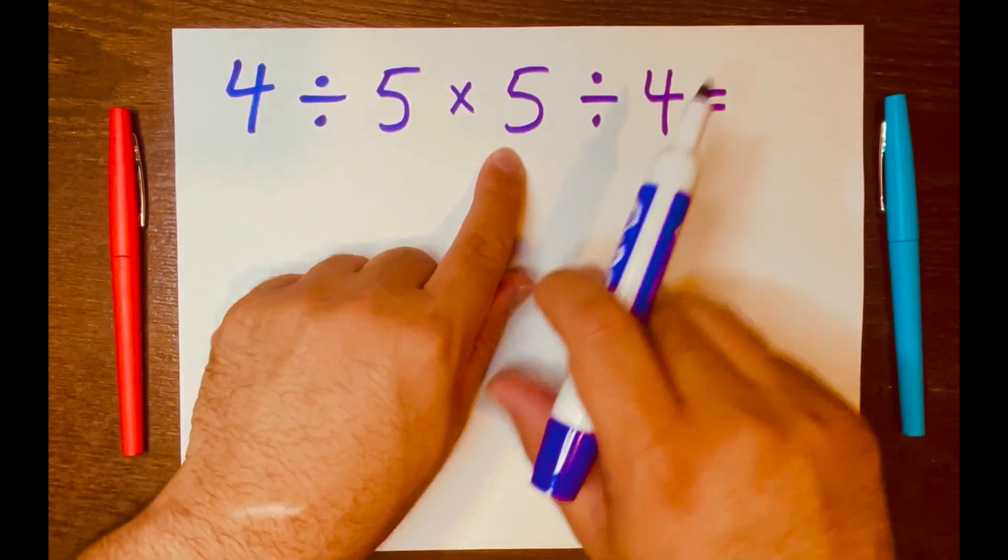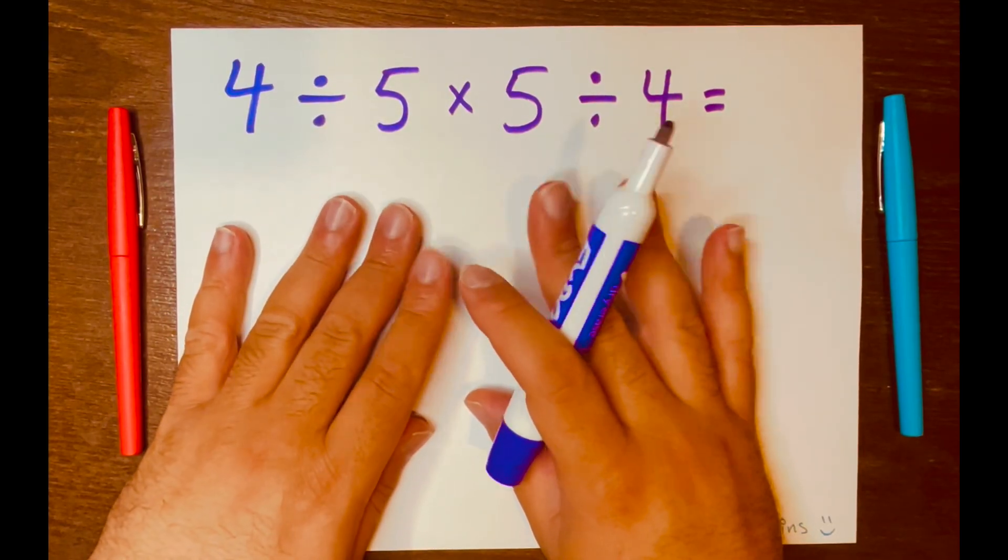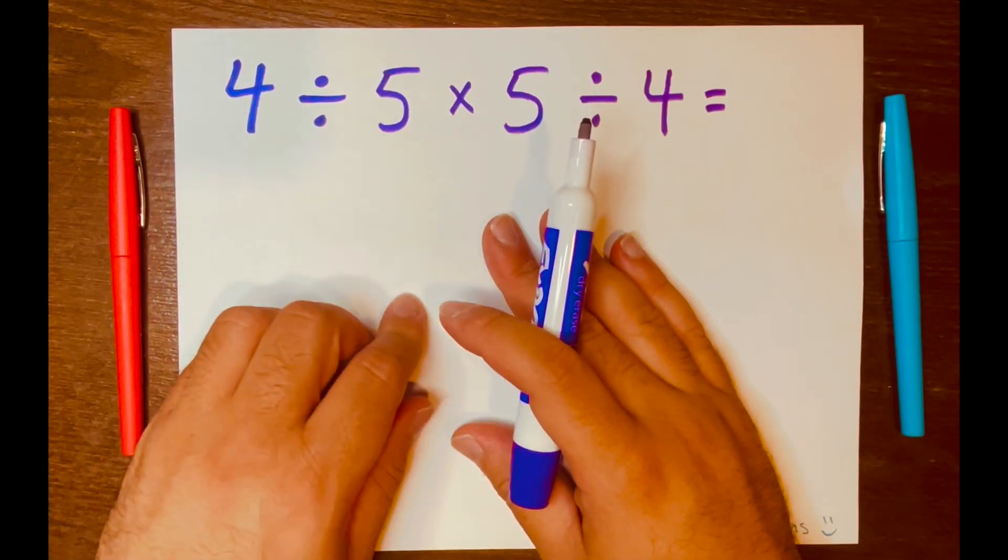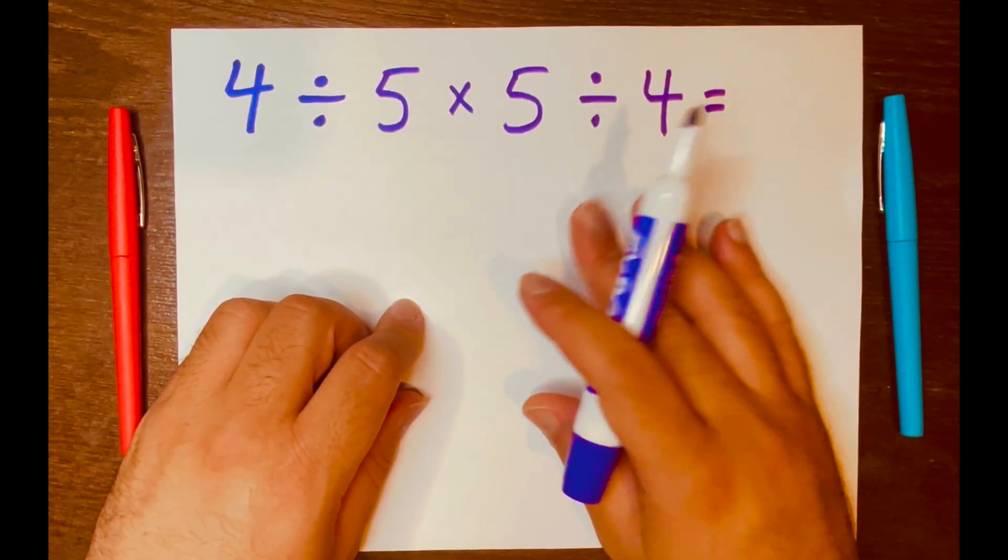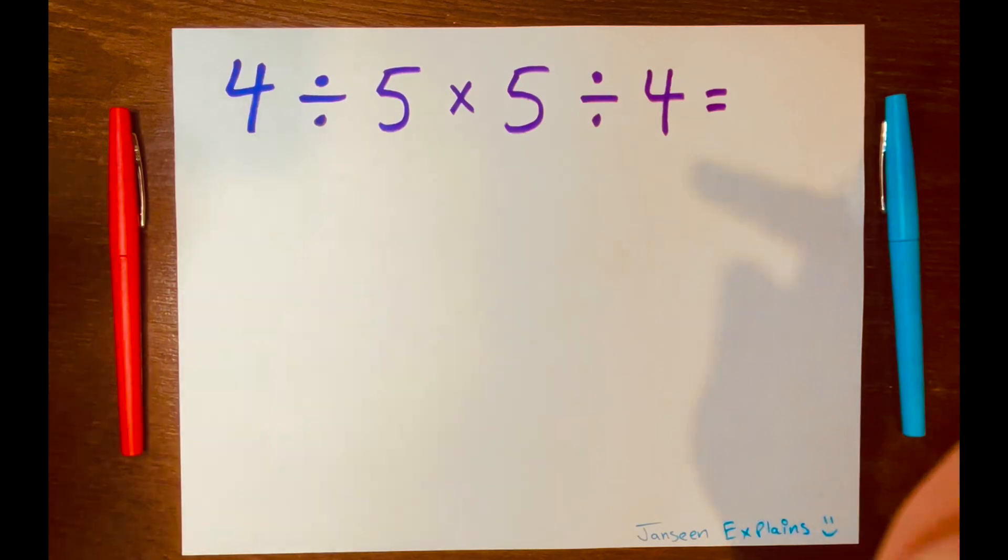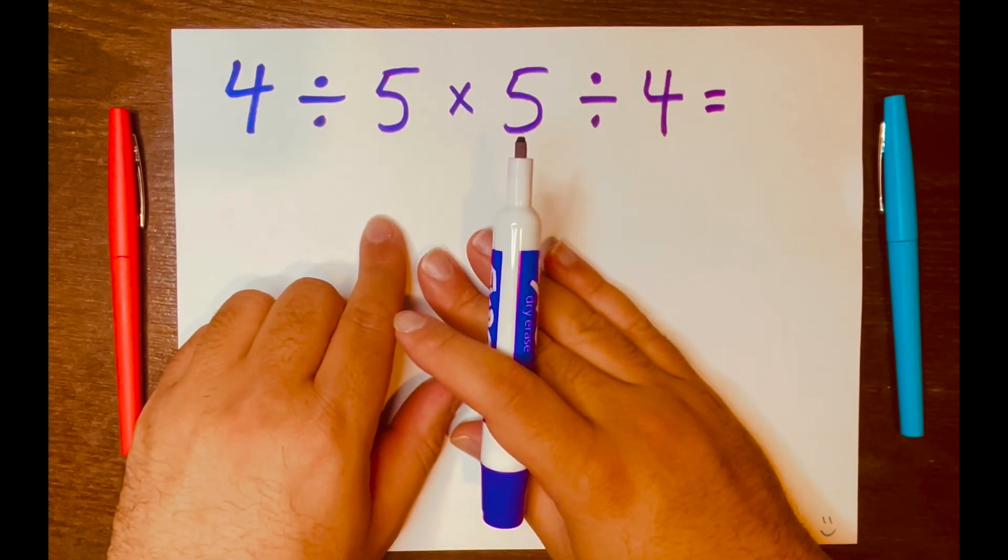We got 4 divided by 5 times 5 divided by 4 equals. So how do we begin solving this problem? I see division, multiplication, I'm thinking of PEMDAS. And according to PEMDAS, it tells us to read from left to right according to its levels. And we know that division and multiplication are within its own level. So we just read from left to right, and let's see what happens.